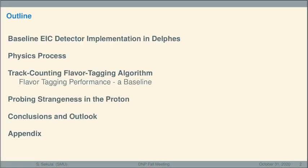I'm going to talk a little bit about our baseline electron ion collider detector implementation. We're using the Delphes fast simulation framework to do this work. I'll talk a little bit about the physics process we're interested in studying and then the experimental approach we're taking to isolating that process. And then talk a little bit about how that can help us to probe the degree of strange quark contribution to the proton at a future electron ion collider program. And I'll offer some conclusions and outlook at the end.